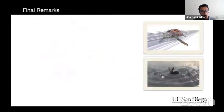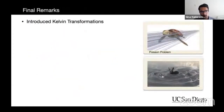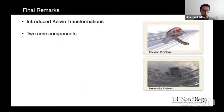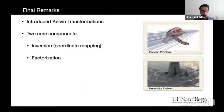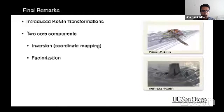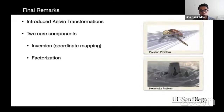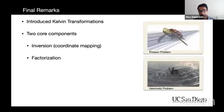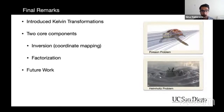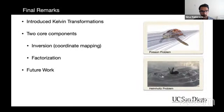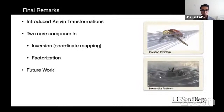Today we introduced Kelvin transformation to solve infinite domain problems. Its two core components are a simple inversion and a factorization. For Poisson problems this is a wrapper around standard solvers; for the Helmholtz equation, to the best of our knowledge, we introduced the first infinite domain computation without artificial absorbing boundary conditions. The natural next question for future work is: what other PDEs can benefit from Kelvin transformation? Thank you for your attention.